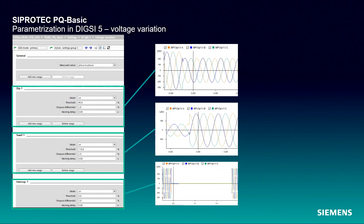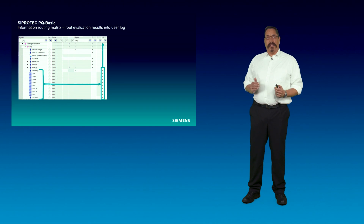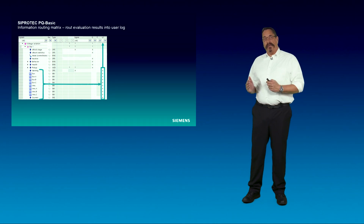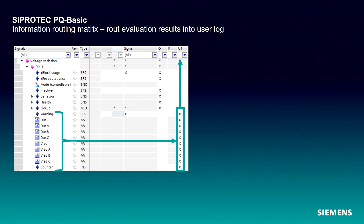Voltage variation: let us now take a look at the parameterization for voltage variations. The default configuration of thresholds and dropout differentials is already conformed to event classification standards. The information routing matrix: let us do information routing for voltage variations. The event indication and relevant evaluation results, like phase-related duration and extreme value, can be easily routed into logs using the information routing matrix.